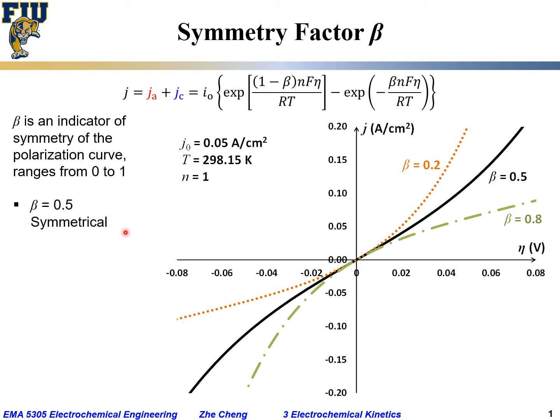0.5 is symmetrical for the polarization curve. On the other hand, if beta, the symmetry factor, is smaller than 0.5, such as this orange dotted line for beta equals 0.2, you see that at the same overpotential, anodic 0.2 versus cathodic 0.2, the anodic current would be much higher than the cathodic current.